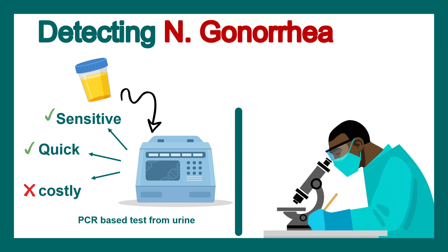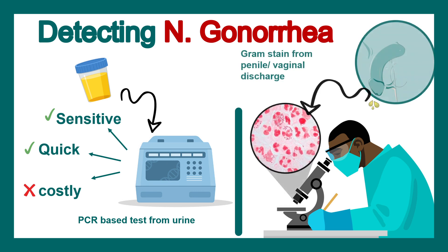Another diagnostic approach: if there is purulent discharge from the vagina or penis, a smear can be gram-stained, and gram-negative diplococci should be visible on the slide. However, this can sometimes be misleading, so PCR-based methods or ELISA-based methods are much more sensitive for detecting the infection.